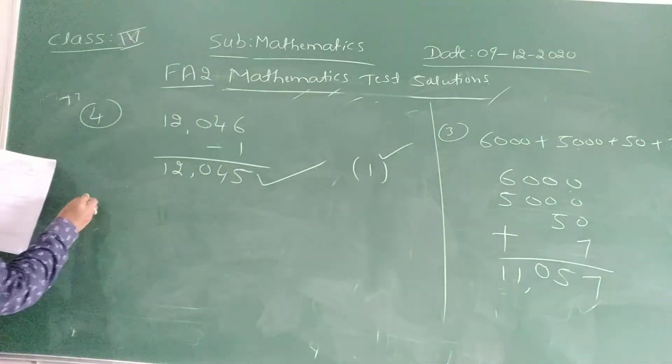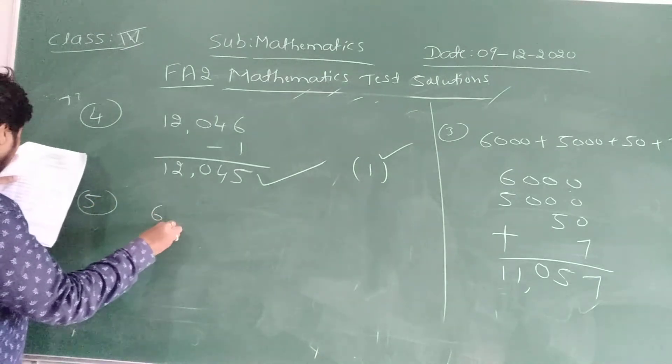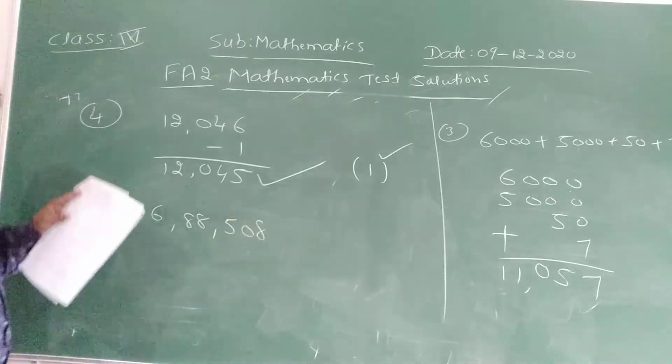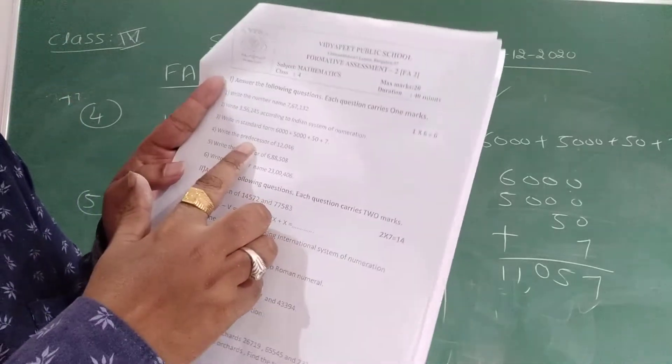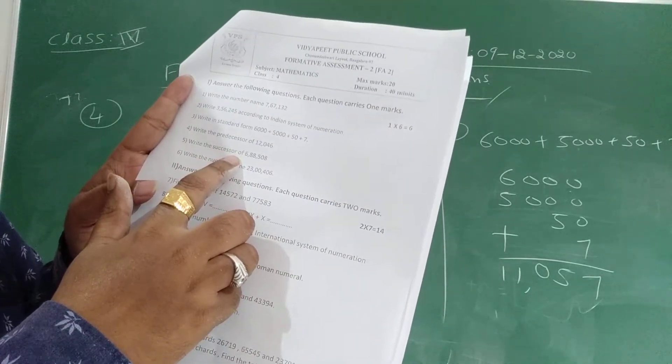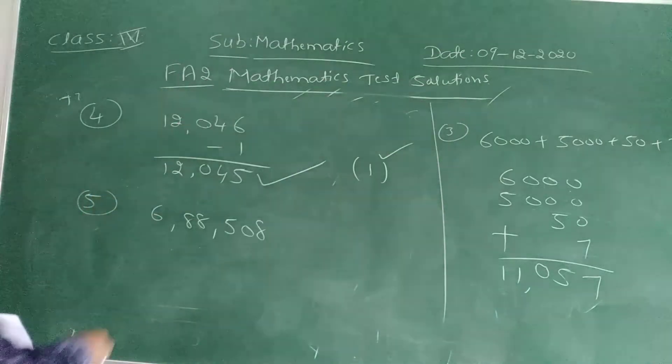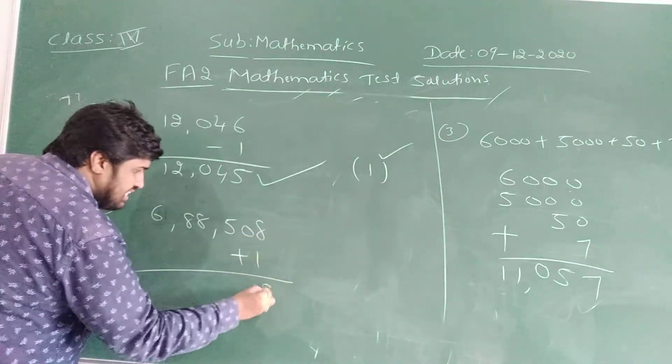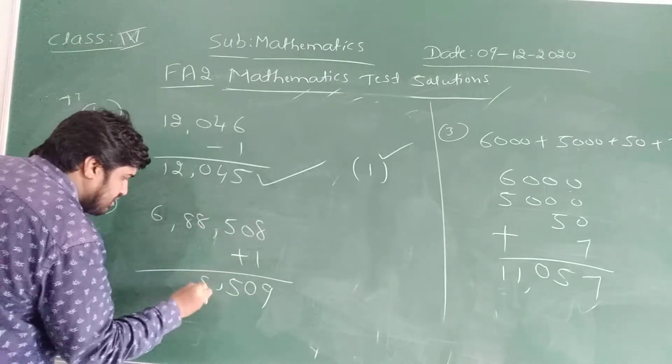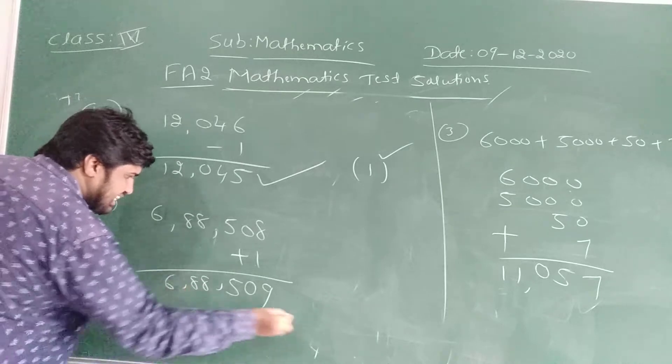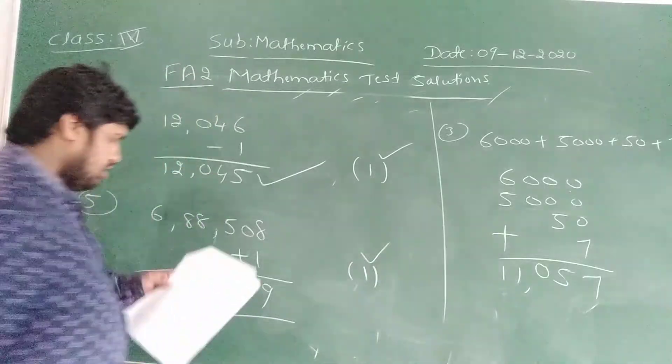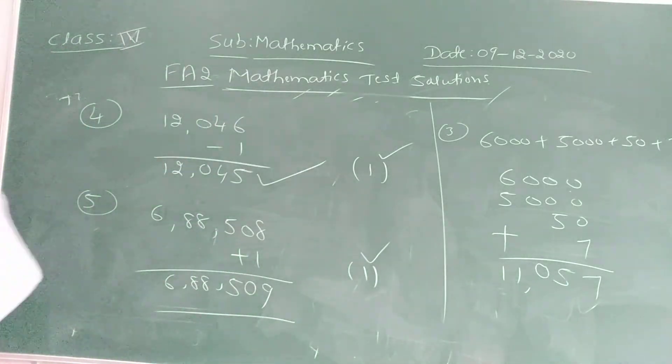Question number 5, write the successor of 6,88,508. Dear children, now only I told you, predecessor means we have to add 1. See, I am going to add 1. 8 plus 1 is 9, 0, 5, comma, 8, 8, comma, 6. It is 6,88,509. If you write like this, easily you will get 1 mark.